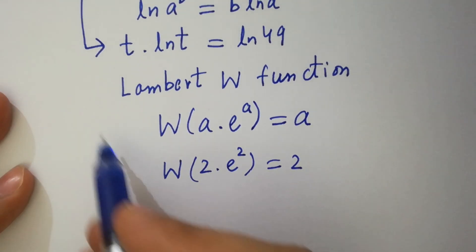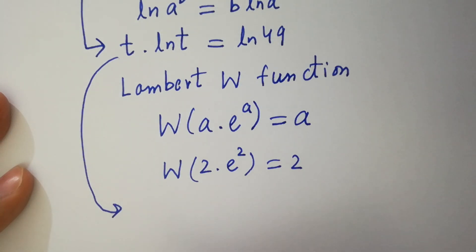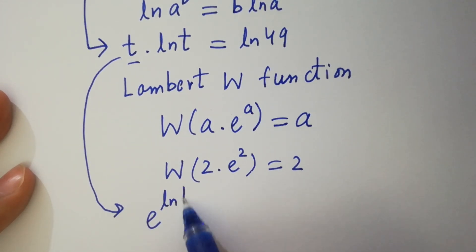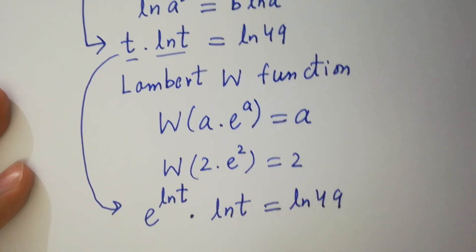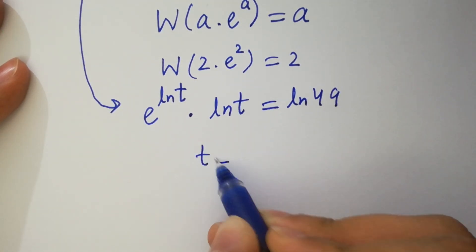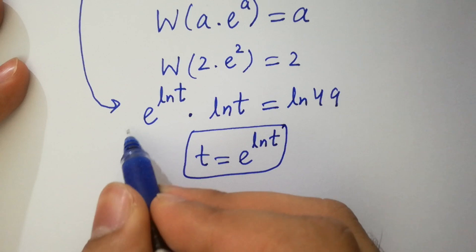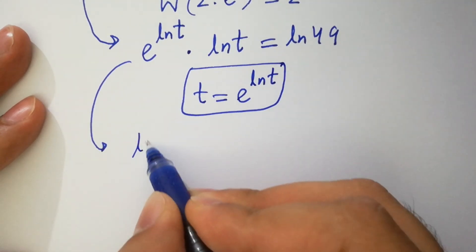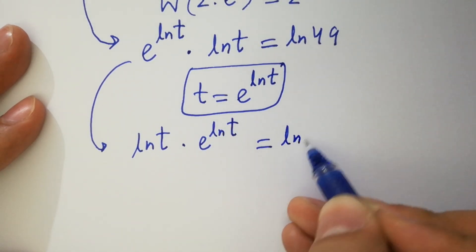So here, t ln t equals ln 49. This can be written as e to the power ln t times ln t equal to ln 49, since t equals e to the power ln t. So it can be rewritten as ln t times e to the power ln t equal to ln 49.